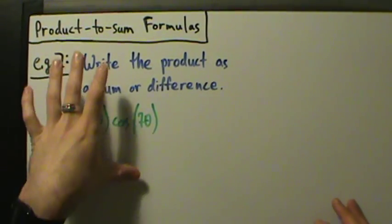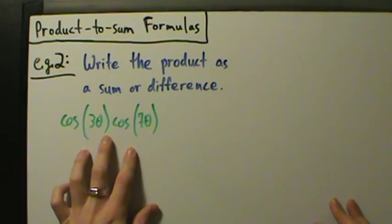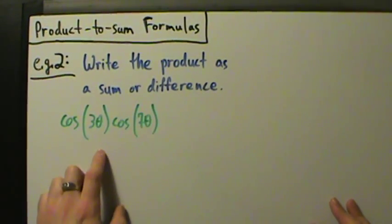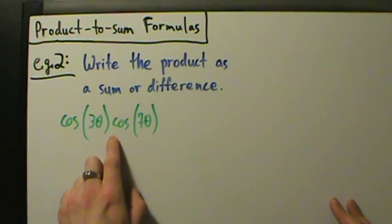Here's example two of using product-to-sum formulas to rewrite products as sums or differences. We want to write the product as a sum or a difference, and the product is cosine of 3θ times cosine of 7θ.